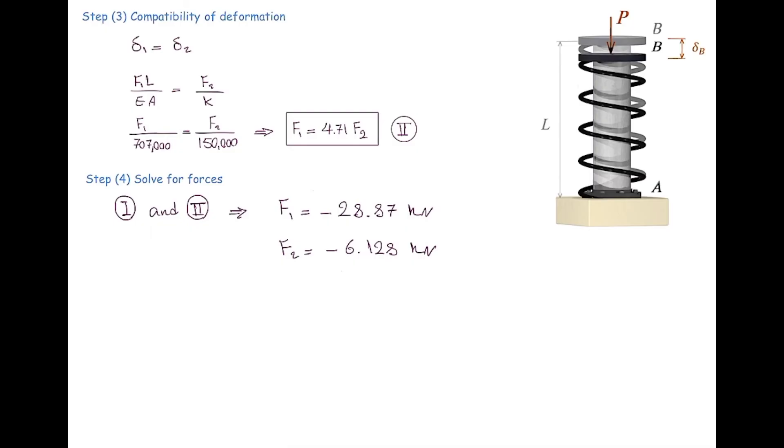The last part is asking for determining how much is the deformation in the top plate. The movement of the top plate is equal to the deformation in the shaft or the deformation in the spring. Either of these two. These two are equal to each other.